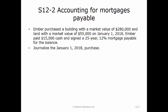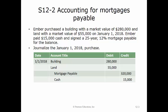Ember purchased a building with a market value of $280,000 and land with a market value of $55,000. On January 1st, 2018, Ember paid $15,000 cash and signed a 25-year, 12% mortgage payable for the balance. To journalize the purchase, you would debit building for $280,000 and land for $55,000, and credit mortgage payable for $320,000 and cash for $15,000.